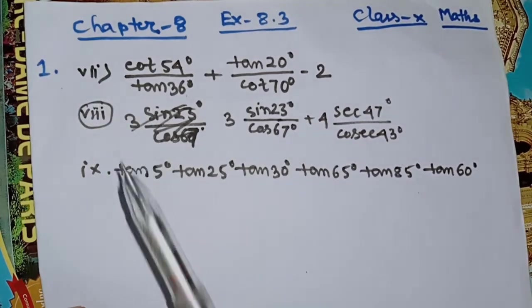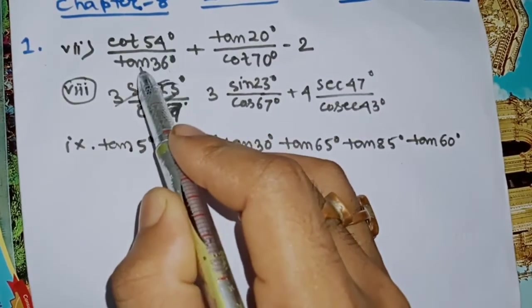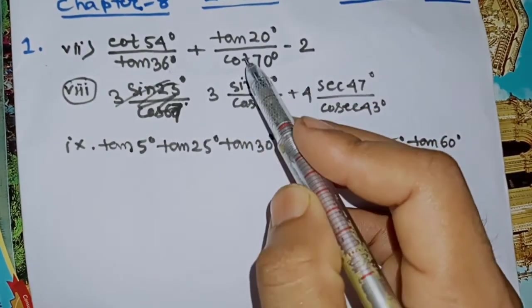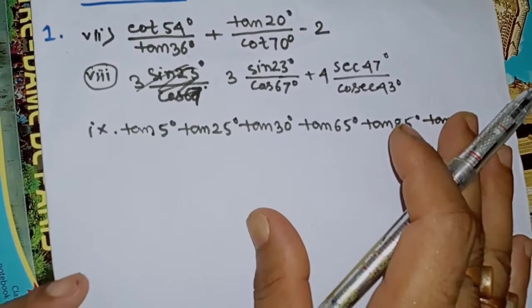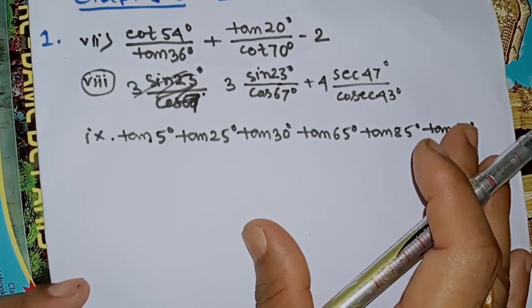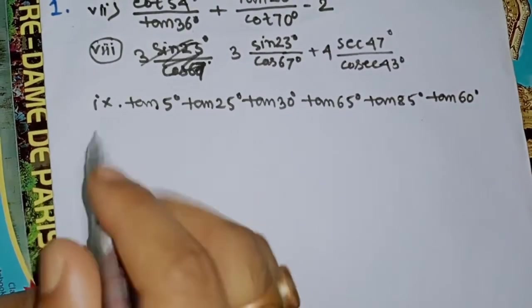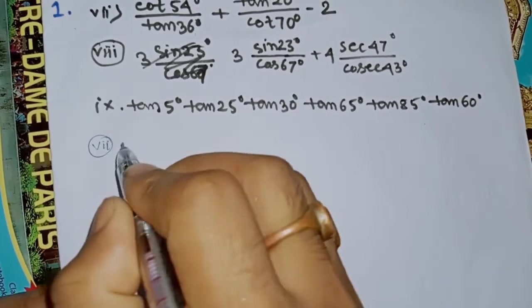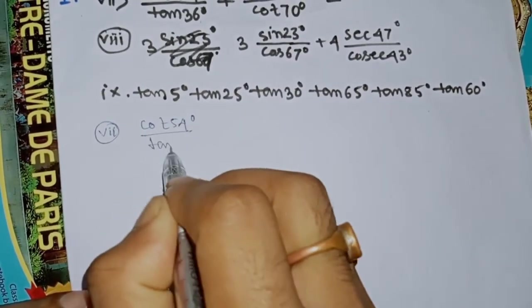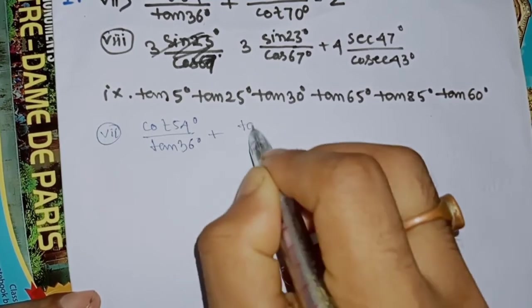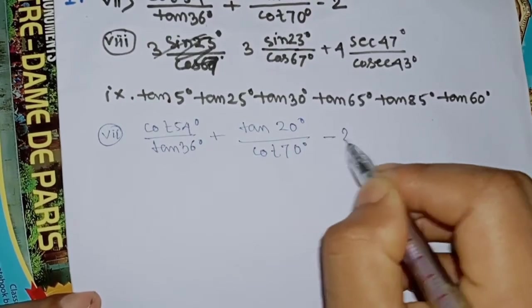From the Facebook page, the Facebook page will be number one. Roman 7, Roman 8, Roman 9, Roman 7. Code 54 degrees, upon 1036 degrees, plus 1020 degrees, upon code 70 degrees minus 2. These are the same as the code for Roman 9. The four-corner nine angles — downloading: high court 54 degrees, when you fly 1036 degrees plus 1020 degrees, when you fly got 70 degrees minus two.